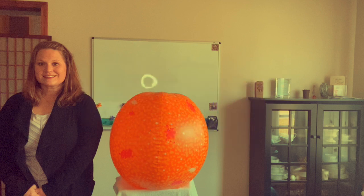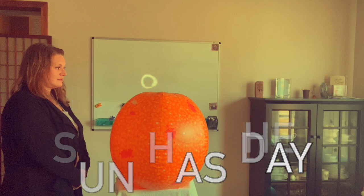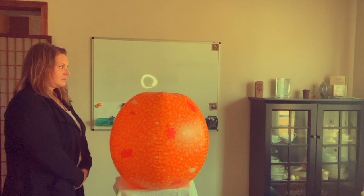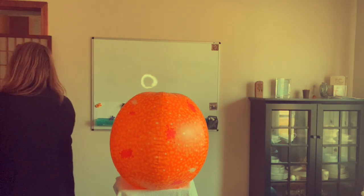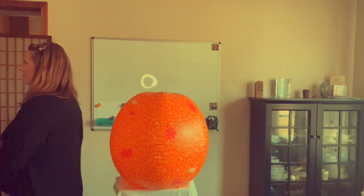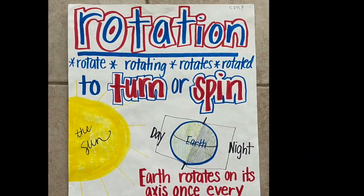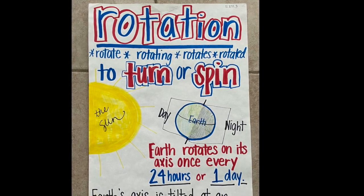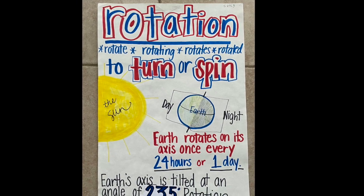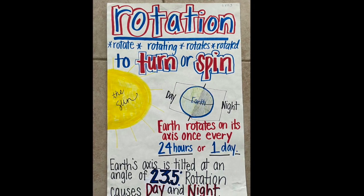If I were Earth and I'm facing the sun right there — the side of Earth that faces the sun has day. The side that's not facing the sun is having night time. So when Earth spins around, the side that is facing the sun has day, and the side that faces away from the sun has night. That's rotation — rotation means to turn or spin. As Earth spins or rotates on its axis once every 24 hours, or one day, it is causing day and night. Rotation causes day and night.